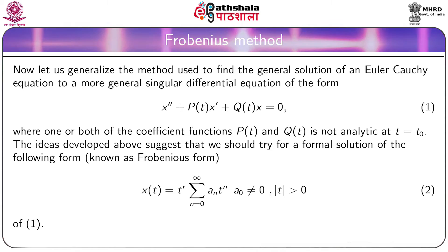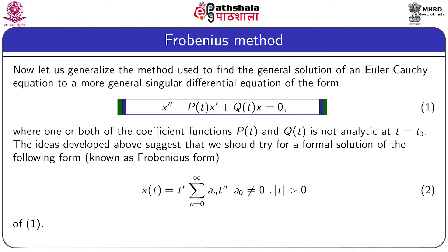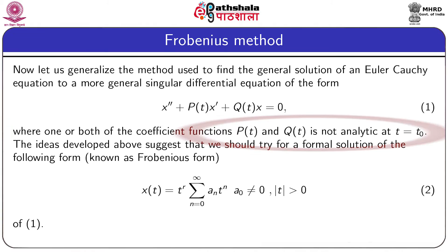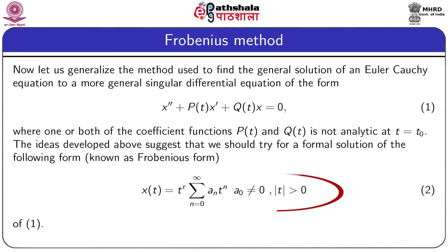We now discuss the more general singular differential equation of the form x'' + p(t)x' + q(t)x = 0, given by equation 1, where one or both of the coefficient functions p(t) and q(t) is not analytic at the point t = t₀. The idea developed here suggests we try a formal solution of the form x(t) = t^r · Σ(n=0 to ∞) aₙtⁿ, where a₀ ≠ 0 and |t| > 0, given by equation 2. This is known as the Frobenius form.